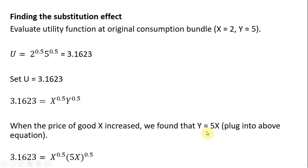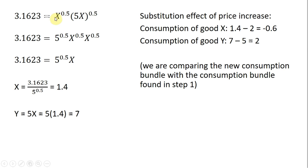Where we see Y, we plug in 5X, so 5 and X are both raised to the 0.5 power. Bringing the 5 in front, 5 to the 0.5 remains, and X to the 0.5 times X to the 0.5 is just X. Dividing through by 5 to the 0.5, we find X equals 1.4. Plugging 1.4 into Y equals 5X gives Y equals 7 — matching the graphical results. The substitution effect is 1.4 minus 2, or minus 0.6 units of good X.